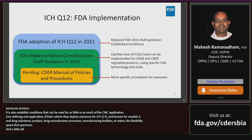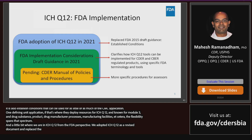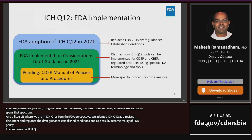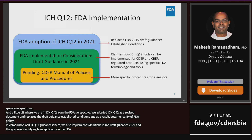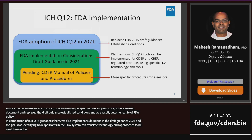From an FDA perspective, we adopted ICH Q12 in 2021 as a Step 5 document, which replaced our 2015 draft guidance on established conditions. That guidance was no longer necessary as ICH Q12 became reality and we can now point to that as official FDA policy. In parallel, we also published FDA's implementation considerations draft guidance document in 2021.